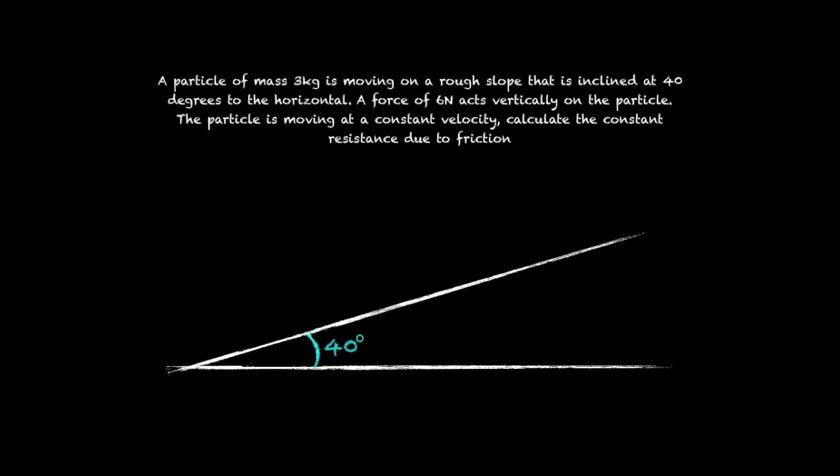Moving on to the second example, a particle of mass 3 kilograms is moving on a rough slope that is inclined at 40 degrees to the horizontal. A force of 6 newtons acts vertically on the particle which is moving at a constant velocity. Calculate the constant resistance due to friction.